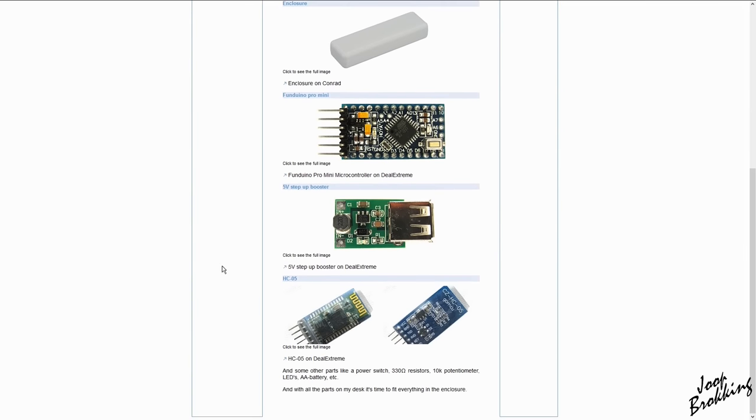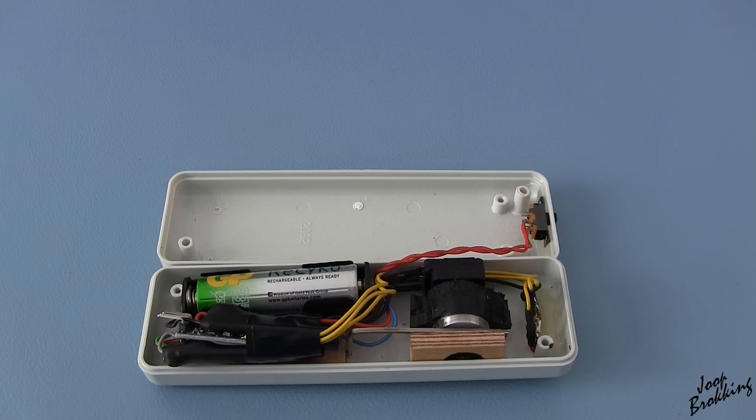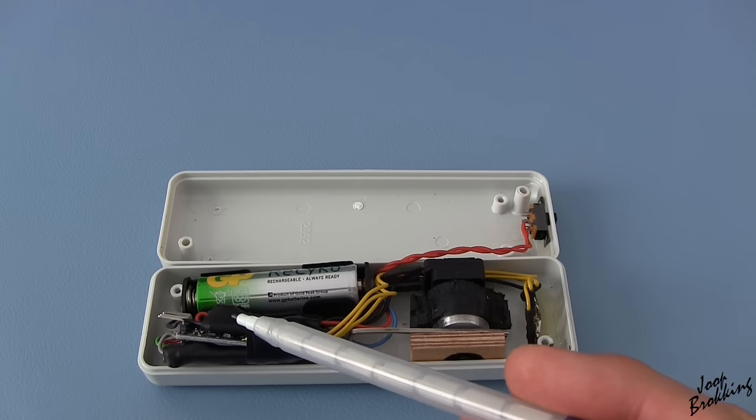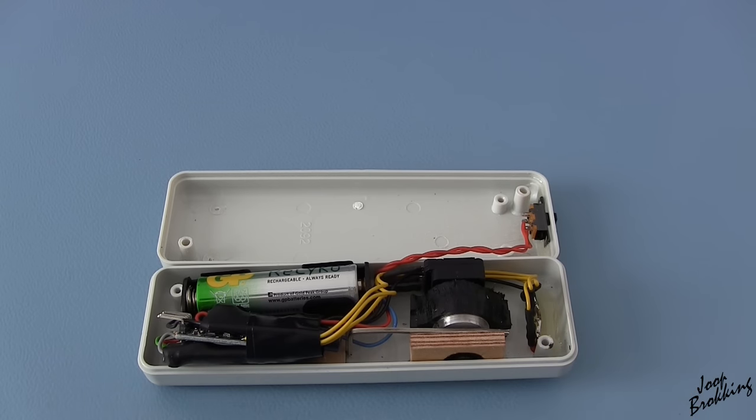The voltage booster converts the battery voltage to 5 volts. This 5 volts is used to power the Arduino and the Bluetooth module.